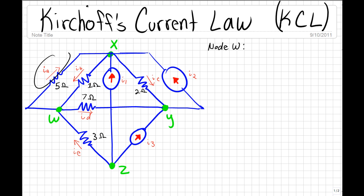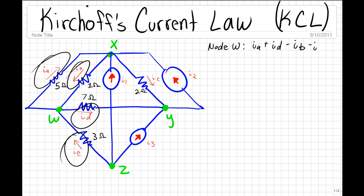Since current IA is leaving node W, it's going to have a positive sign: plus IA. Current ID is also leaving node W, so it's also going to have a positive sign: plus ID. However, current IB is entering node W, so it's going to have a negative sign: minus IB. And current IC is also entering node W, so it's also going to have a negative sign. So the sum of this should equal to zero.